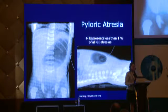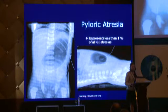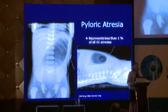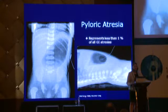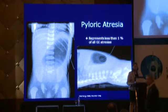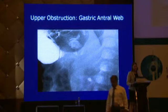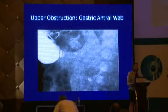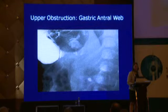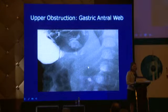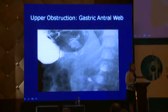This is a case of pyloric atresia — the child had a large stomach on antenatal imaging and there is no distal gas. Pyloric atresia is very rare, less than 1% of all atresias, but it can masquerade as duodenal atresia if you're not actually seeing contrast in the proximal duodenum. Other causes of upper obstruction in this area include gastric antral web, which requires meticulous attention to detail. It's important to determine whether there is one web or more than one — in this case with the patient in the right lateral position, there are actually two webs.